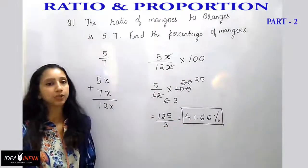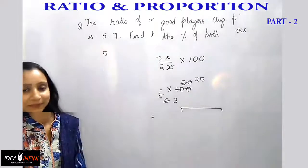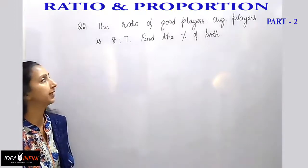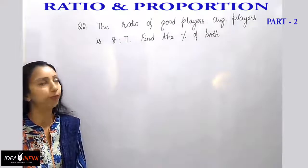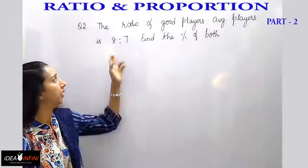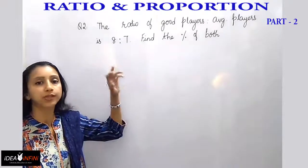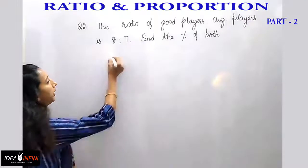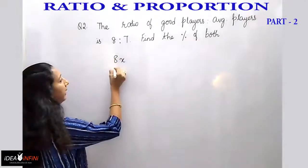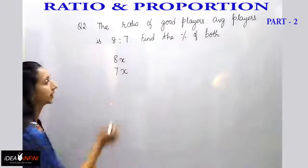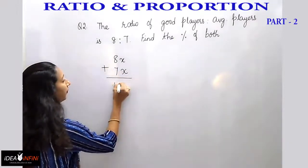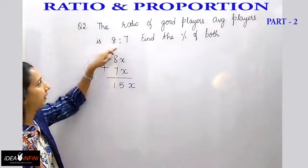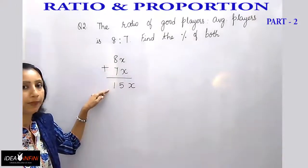Here is the second example: the ratio of good players to average players is 8 is to 7 — find the percentage of both. Just like the earlier problem, the number of good players will be 8x and the number of average players will be 7x. Adding them up gives 15x as the total number of players.